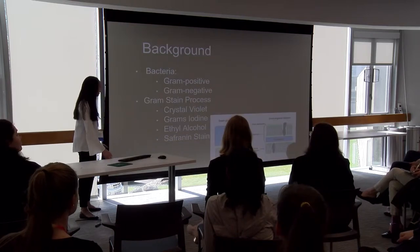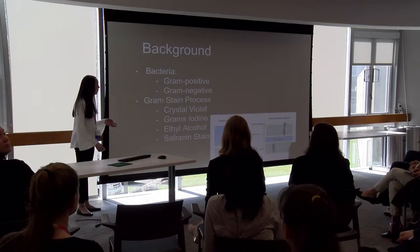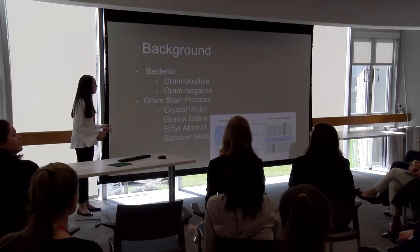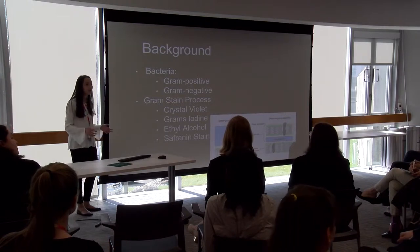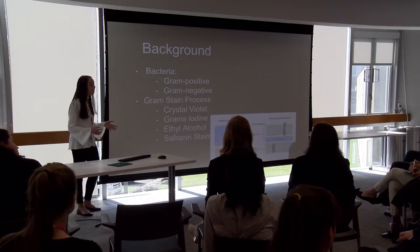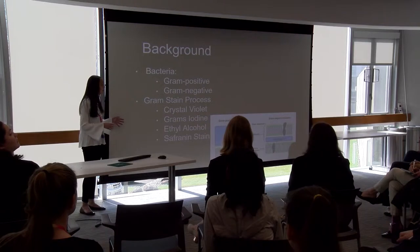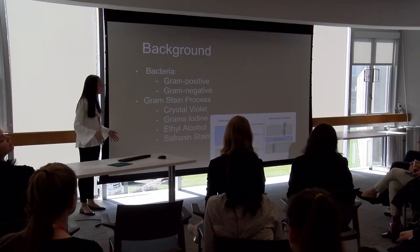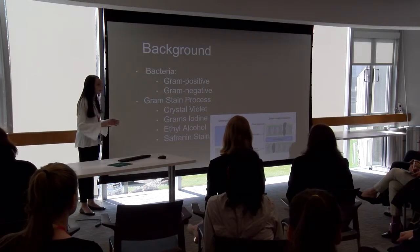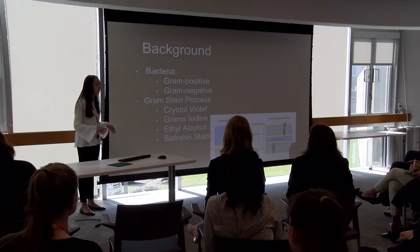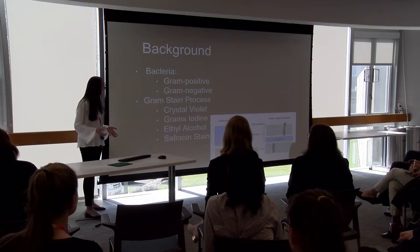For some background: the two types of bacteria I used are gram-positive and gram-negative, and these classifications come from cell wall composition. A gram-positive bacteria has a cell wall that is high in peptidoglycan. A gram-negative bacteria also has a cell wall high in peptidoglycan, but it's surrounded by an outer lipid layer.